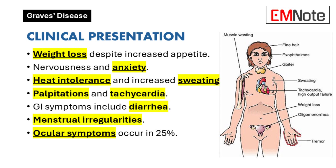Additional symptoms include palpitations and tachycardia, where the heart rate frequently exceeds 100 beats per minute. Gastrointestinal symptoms may include diarrhea or frequent bowel movements. Women may also report menstrual irregularities. Ocular symptoms occur in approximately 25% of patients, known as Graves' orbitopathy, which can manifest as proptosis or bulging eyes and periorbital edema.